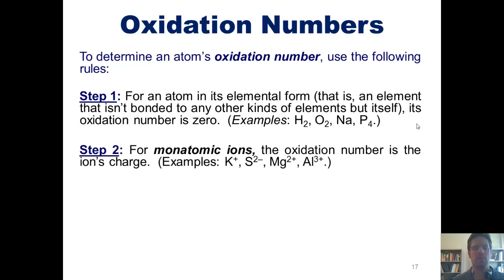Step two: for monatomic ions, that is species that have charges, the oxidation number is the same as the ion's charge. So for K+, its oxidation state is +1. For S2-, its oxidation state is -2, and so forth.